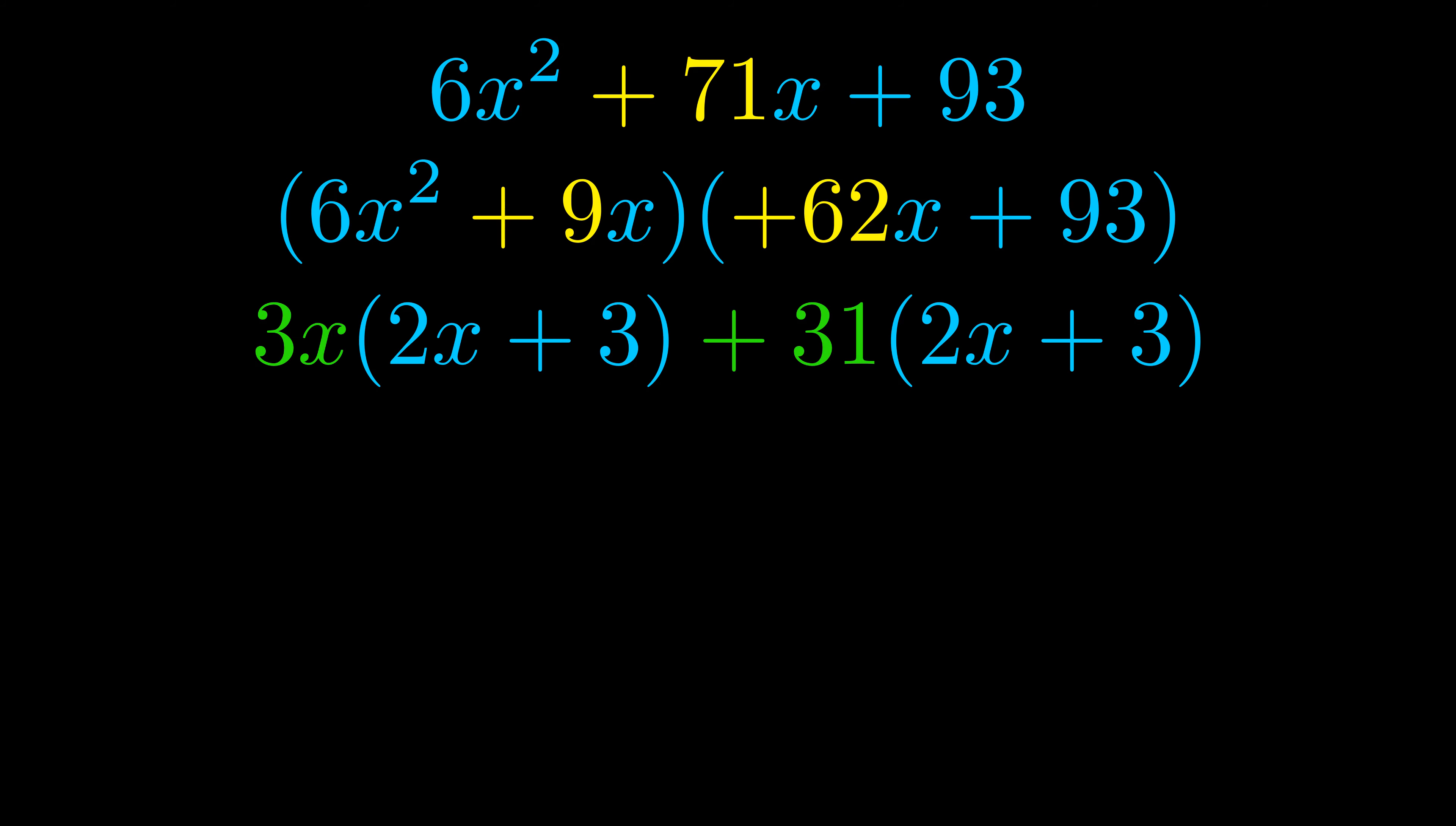Notice also how what remains inside of the parentheses is the same in both cases. The blue values are the same. Those blue values will become one of our factors and we will combine the two green values, the GCFs that we pulled out, to get the other one. And that is our fully factored equation.